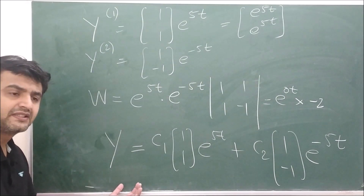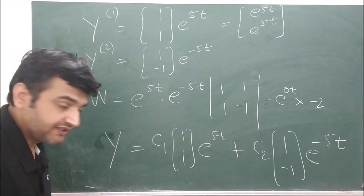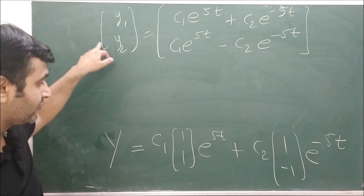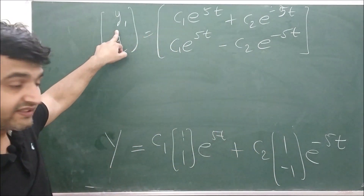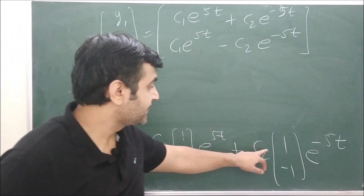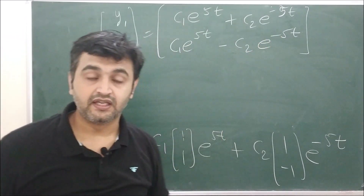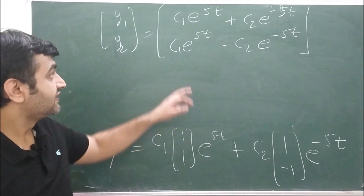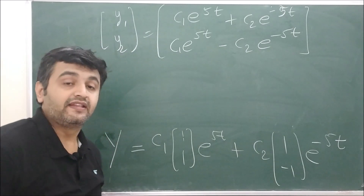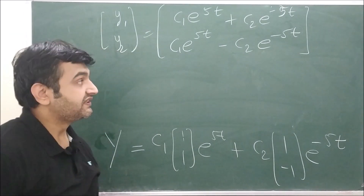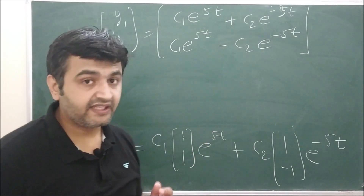You can write the general solution as c1·y1 + c2·y2, or explicitly state the components. Distributing, y1 = c1·e^(5t) + c2·e^(−5t) and y2 = c1·e^(5t) − c2·e^(−5t). The solutions must be a linear combination of e^(5t) and e^(−5t) to satisfy the system. This is the general solution to the given system. From the next example onward, I will only state eigenvalues and eigenvectors — it will be your job to verify them.